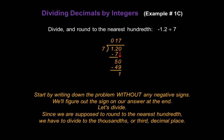Now we can't stop. Since we're supposed to round to the nearest hundredth, we have to divide to the thousandths or the third decimal place. So we need to add one more 0 just like that. Bring that 0 down to our remainder of 1 to make it a 10, and do one more division problem. How many times does 7 go into 10? One time.